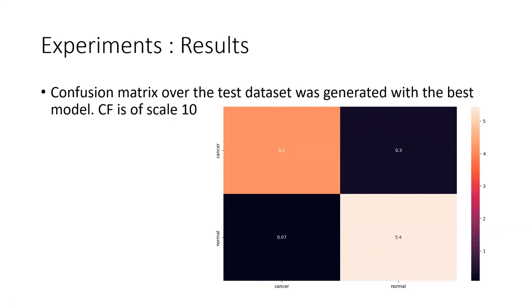We plotted the confusion matrix over the test dataset which was generated with the best model. The confusion matrix was on the scale of 10. This is our confusion matrix.